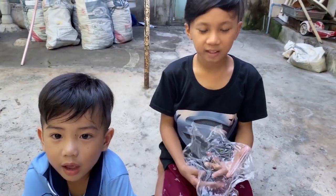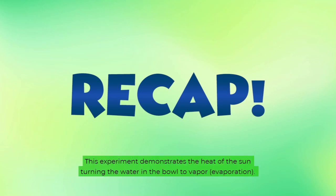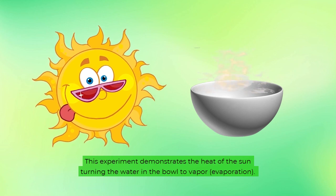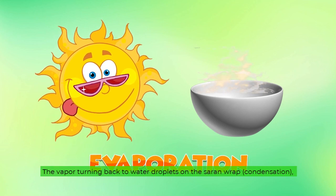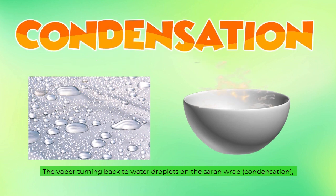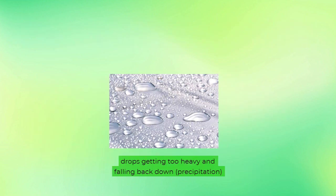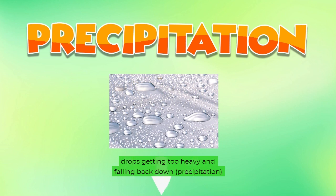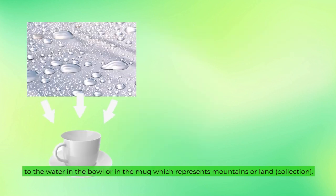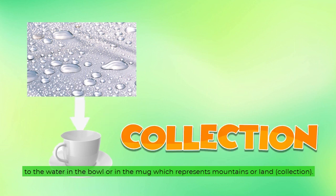Good. This experiment demonstrates the heat of the sun turning the water in the bowl to vapor — that's evaporation. The vapor turning back to water droplets on the plastic wrap is called condensation. Drops getting too heavy and falling back down, or precipitation, to the water in the bowl or in the mug, which represents mountains or land — which is the collection part.